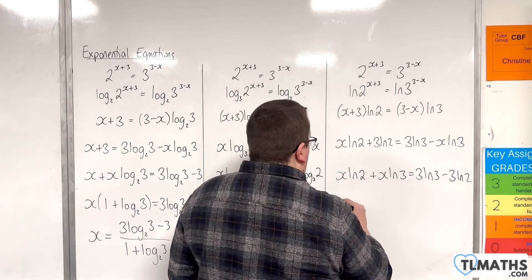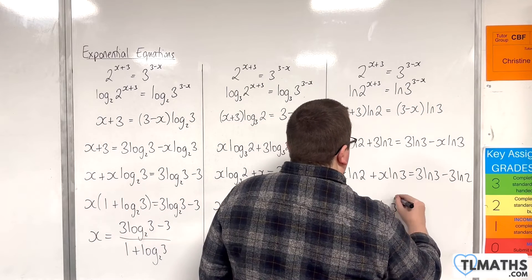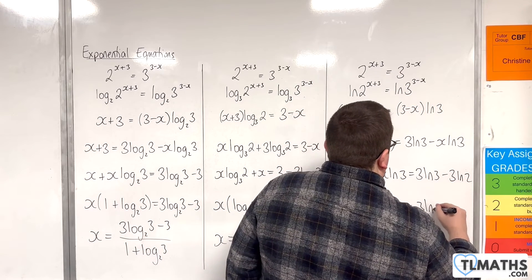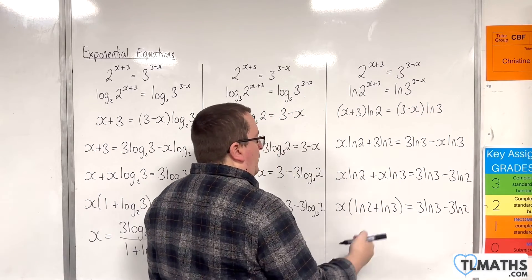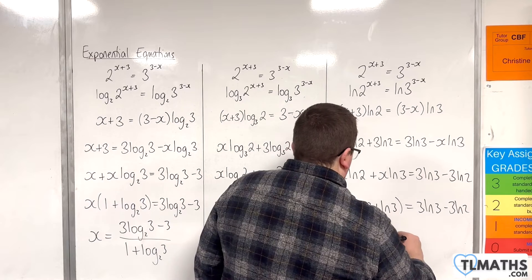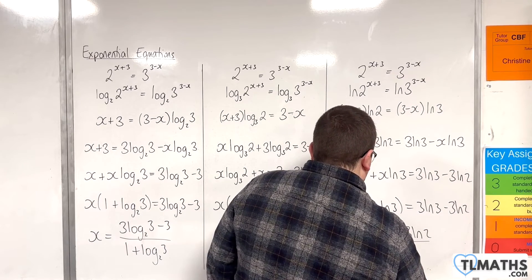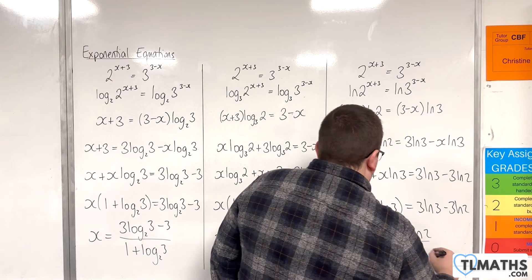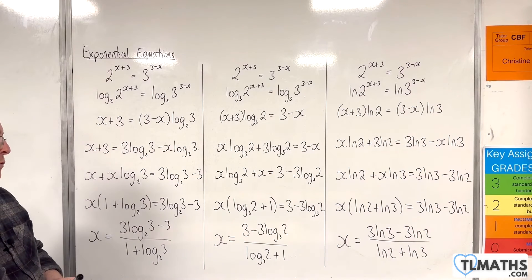So, factorise the left hand side, so x lots of log 2 plus log 3, and now divide both sides by the bracket. Okay, and we have our third form there.